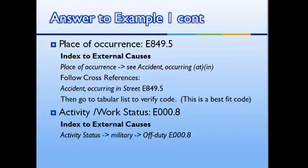The last one we're going to code is our work status. I use the word activity in front because that's how we're going to search for it in our index to external causes. We look under activity status, military, off duty, and we get E000.8.